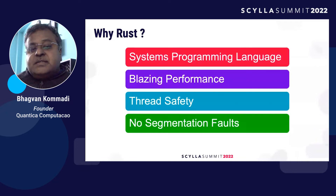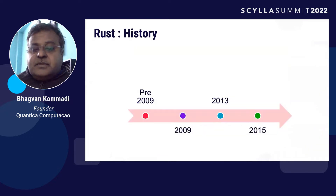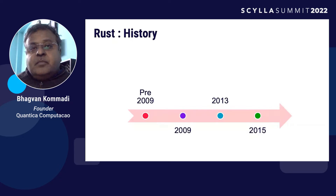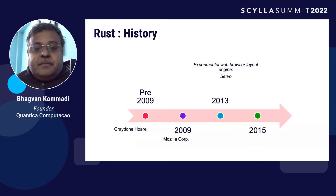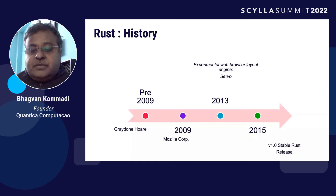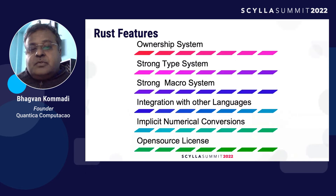The good news in Rust is there are no segmentation faults — that's great news. A little history: around 2009, companies like Mozilla and Samsung started developing the Rust language. Around 2013, they came up with an experimental web browser layout engine called Servo. And in 2015, the first stable version of Rust was released.